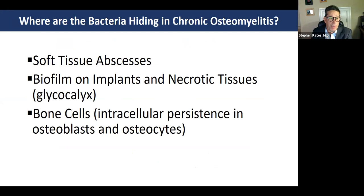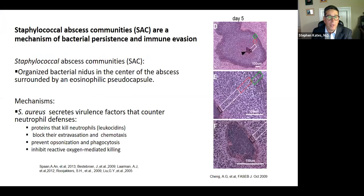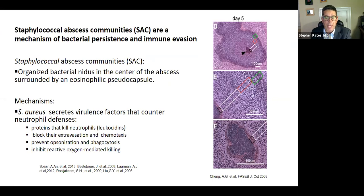So where are these bacteria hiding? They really hide in three different areas: soft tissue, biofilm on the implants, necrotic tissue, and then inside the bone cells. When we did the pin-through-tibia model, we saw what's called staphylococcal abscess communities — previously described in the kidney. These sacs form in the medullary canal of the bone. You see this eosinophilic rim, with bacteria in the middle surrounded by a bunch of macrophages.